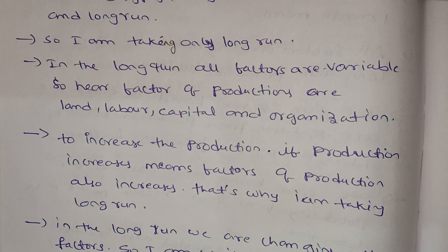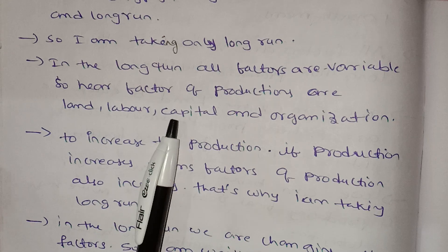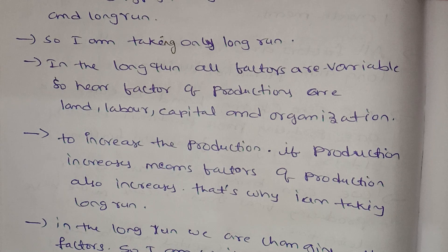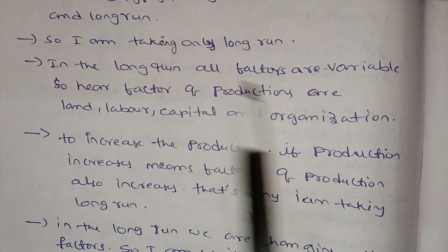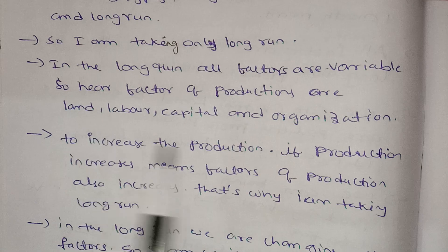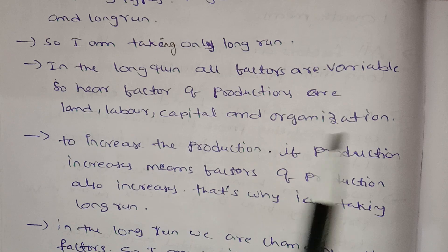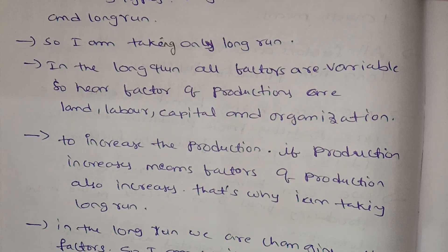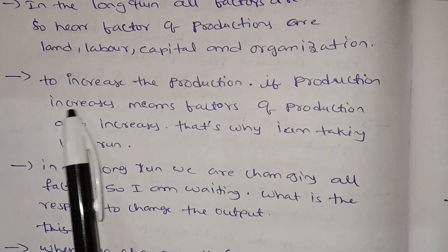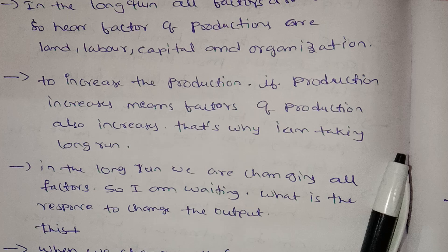So in the long run, factors of production are land, labor, capital, and organization — all are variable. We can do land changes, labor, capital investment, and organization and partners in the long run. Factors of production are now all variable. If production increases, then factors of production also increase. That is why I am taking the long run.